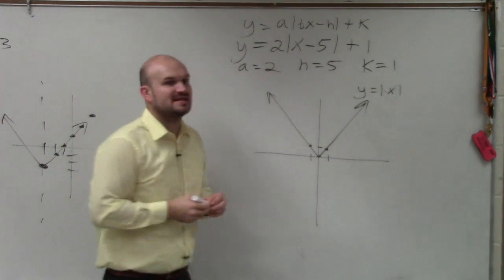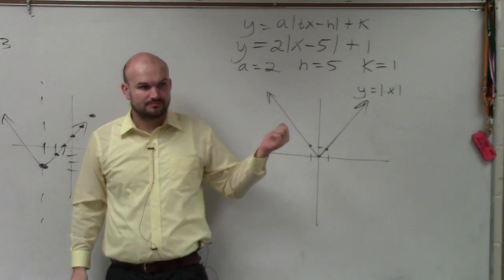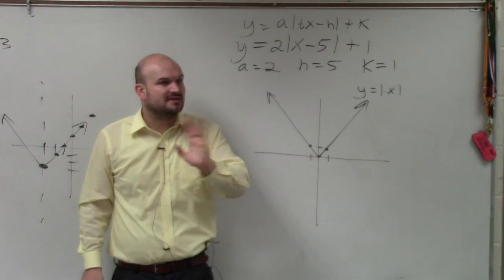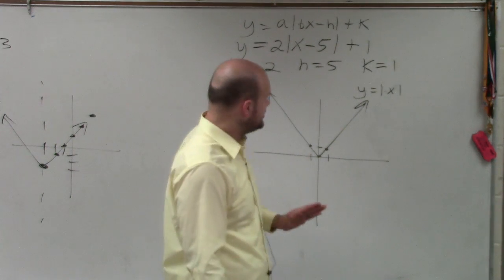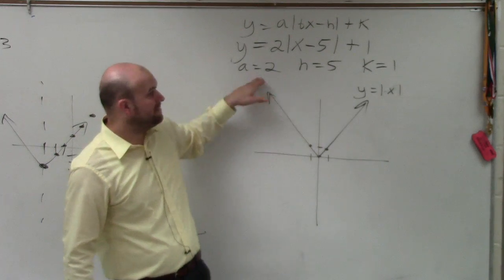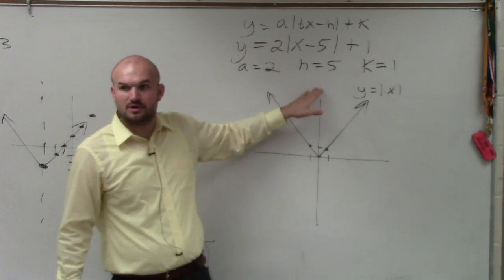This is what y equals |x| looks like. That's what I gave you guys on the front page, right? You don't have to graph this, but if you want to graph the parent graph for every one of your graphs, that's fine. Because all you guys are going to do is take this graph and transform it based on these values, OK?